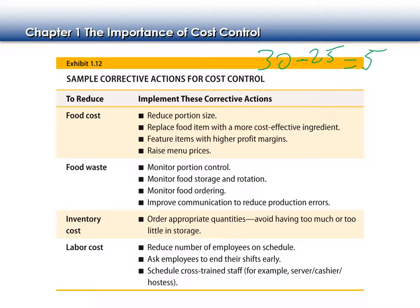You want to make sure staff have the tools available to them. If Sally mis-rang two steaks and Johnny mis-rang three steaks, now we have a coaching issue. As a manager you need to work with Johnny: 'Why did you mis-ring those three steaks?' Many servers forget to ask for the meat temperature. If you walk to the computer and forget to ask how they'd like it cooked, you might just guess medium. That's when mistakes happen.